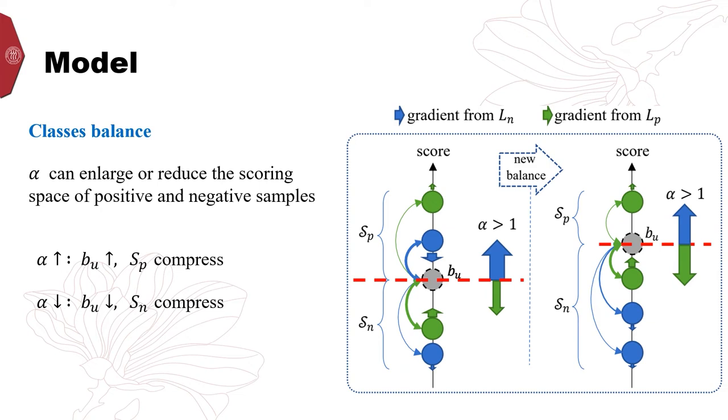For example, amplifying Ln by increasing alpha will push the boundary upward. With the boundary driven up, all positive samples obtain a larger upward gradient by larger Lp and gather into a more compact scoring space. Conversely, the same is true for reducing alpha.